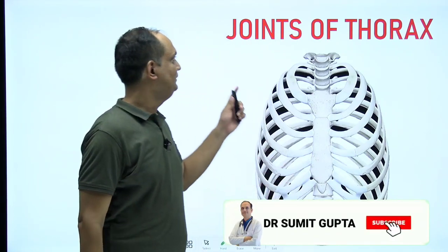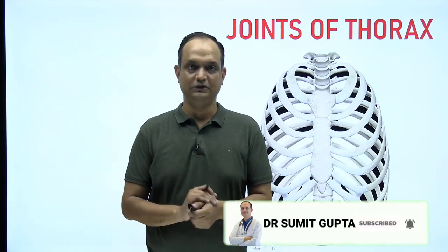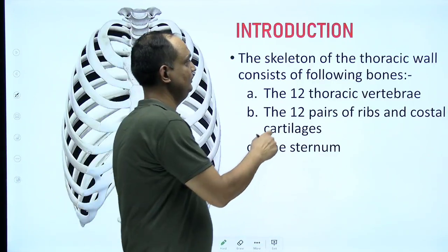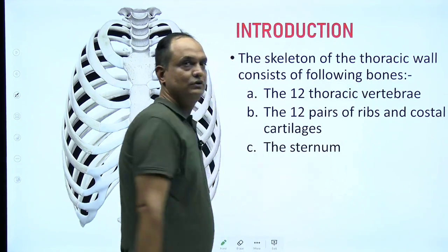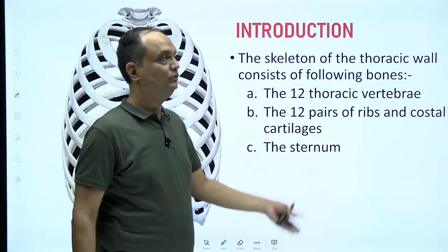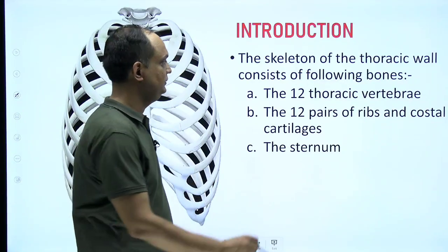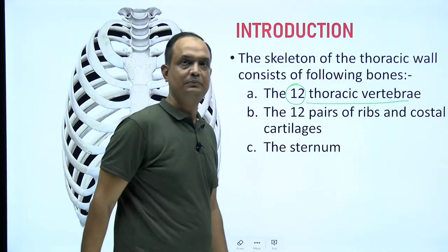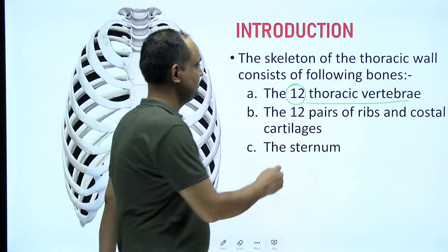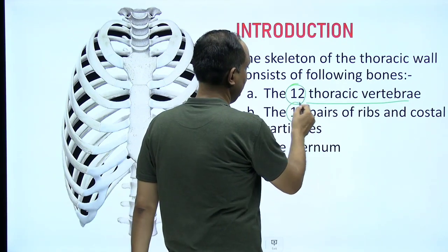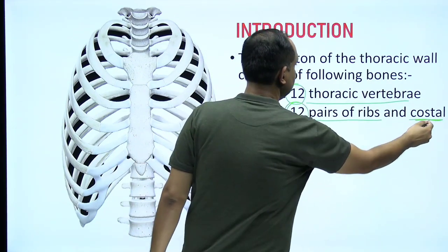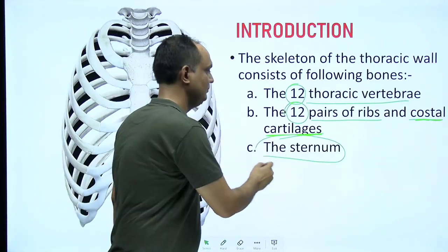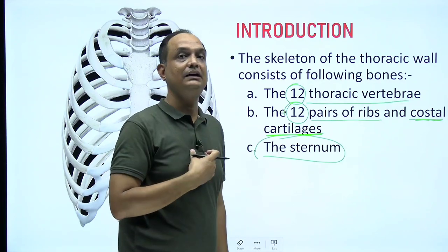Hello students, today we will discuss the joints of the thorax. The skeleton of the thoracic wall consists of the following bones, which form the different joints of the thorax. These bones are: 12 thoracic vertebrae present in the posterior part of the chest wall, 12 pairs of ribs along with the costal cartilages, and a large bone in the center known as the sternum.